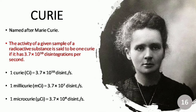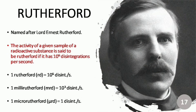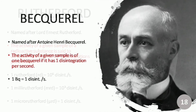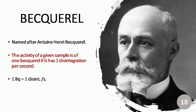Curie has smaller units: one millicurie equals 3.7 × 10^7 disintegrations per second, and one microcurie equals 3.7 × 10^4 disintegrations per second. The next unit is rutherford, named after Lord Ernest Rutherford. The activity of a sample is one rutherford if it has 10^6 disintegrations per second. It also has smaller units: one millirutherford equals 10^3 disintegrations per second, and one microrutherford equals one disintegration per second.